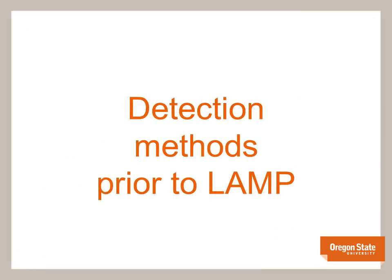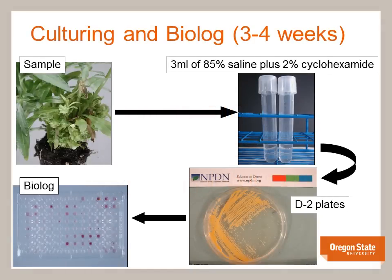Prior to 2007 when we first started developing the LAMP assay, detection of Rhodococcus fascians was much more cumbersome and time consuming. Symptomatic tissue is briefly rinsed with tap water to remove visible soil particles. We then remove small tissue pieces of about 3 to 5 mm in length and place them in duplicate sterile tubes containing 3 ml of 85% saline solution amended with 2% cycloheximide. These tubes are incubated at room temperature for half an hour to 2 hours, after which each tube is streaked to 2 petri dishes containing semi-selective D2 medium. The plates are examined after 5 to 10 days and all colonies resembling Rhodococcus are selected for transfer. Individual colonies are re-streaked a minimum of 3 times or until apparently pure cultures are obtained. This process alone can take up to 2 weeks due to the bacteria's slow growth rate.